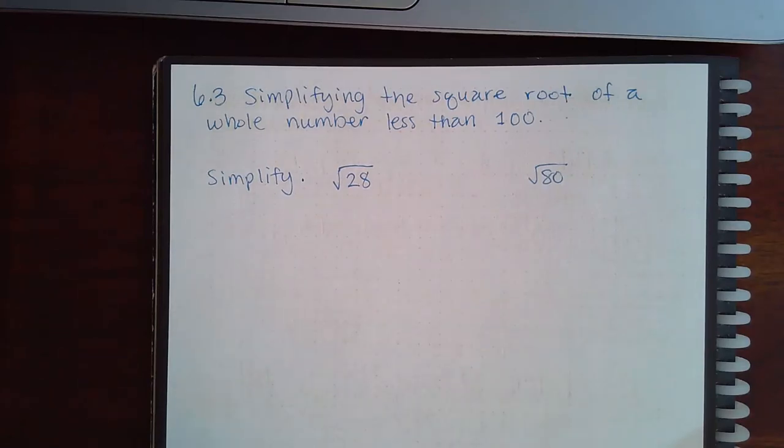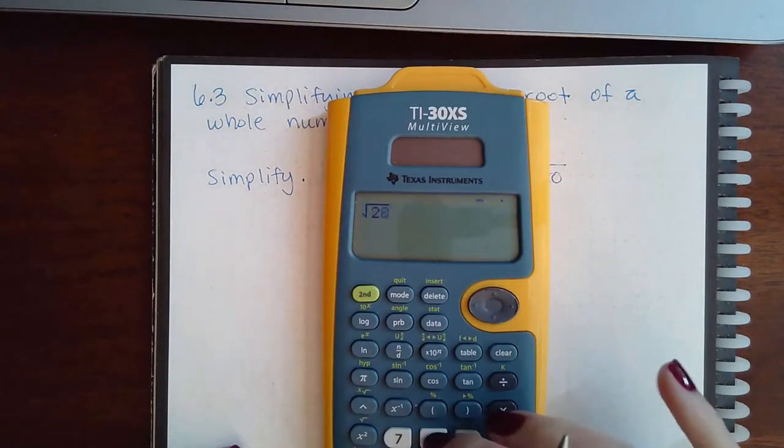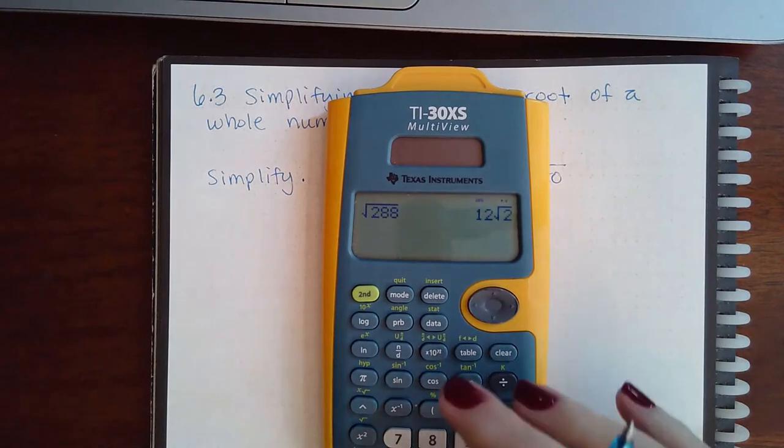In this video we're going to be talking about 6.3: simplifying the square root of a whole number less than 100. Now your calculator will simplify square roots less than 100, they'll even simplify other numbers.